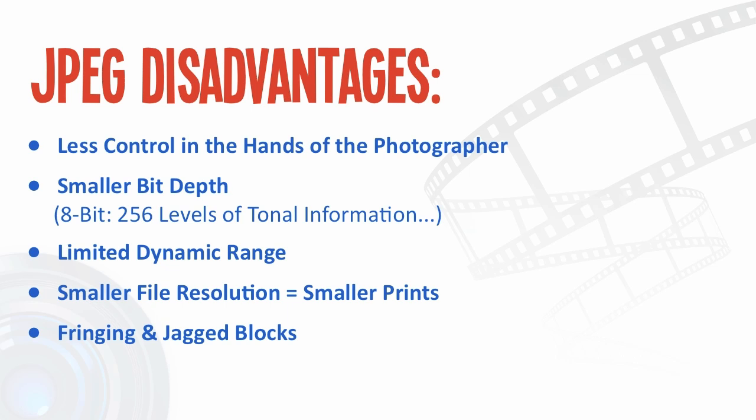JPEG files are not flexible — in actual fact, they are destructive. Every time you open, make changes to, and then save a JPEG file, you are automatically degrading the quality of your image, because you are compressing it a second time. You are taking an image that has already been compressed once and compressing it again, sacrificing more detail. This is referred to as a second generation file, and the more generations you add to a JPEG, the lower the quality that remains.